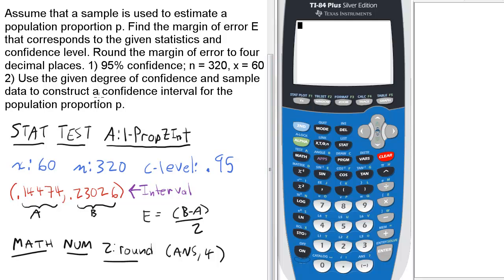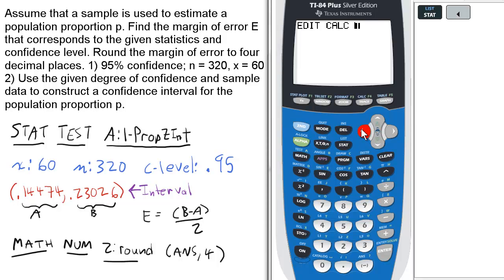The question is given in the upper left. To find the error, first we need to find the interval for this one-prop Z interval question. Press STAT, scroll over to TESTS, and select alpha A for 1-PropZInt.